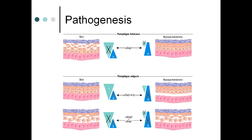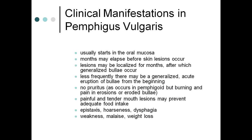In pemphigus foliaceous, desmoglein 1 predominates in skin and desmoglein 3 in mucosa — which is why skin is primarily affected. In pemphigus vulgaris, desmoglein 3 is mainly targeted because it predominates in mucosa, though skin can also be involved via desmoglein 1. So either desmoglein 3 alone or both desmoglines 1 and 3 can be involved.